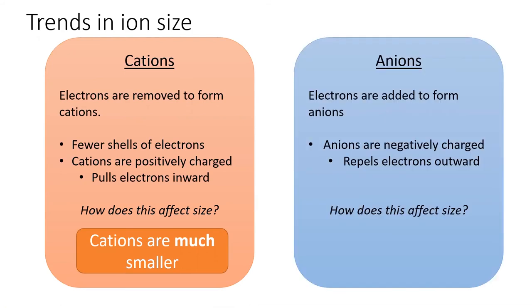On the other hand, anions gain electrons to their outermost energy levels. Anions do not add new energy levels, but they do contain a negative charge, which decreases the effective nuclear charge felt by those electrons. In other words, the negative charge repels the electrons outward, increasing the radius.